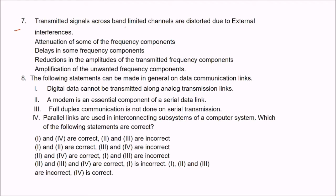Transmitted signals across band-limited channels are distorted due to several factors: external interference, attenuation of some of the frequency components, delaying some frequency components, reductions in amplitude, or amplification of unwanted components. The correct answer is: the attenuation of some of the frequency components.